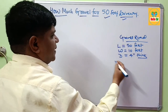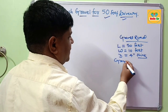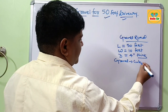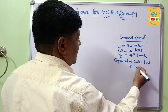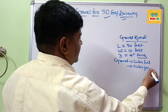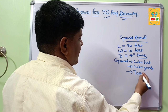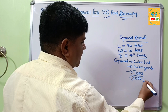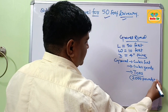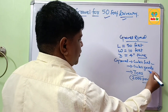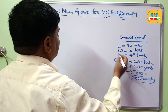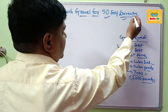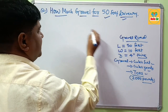Gravel quantity for making a driveway is generally measured in cubic feet, cubic yards, and imperial tons. An imperial ton weighs about 2000 pounds. Using these three measurements — cubic feet, cubic yards, and tons — we will calculate the quantity of gravel required for a 50-foot driveway.